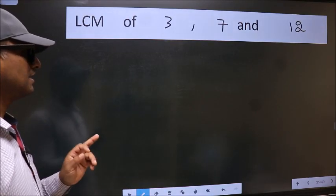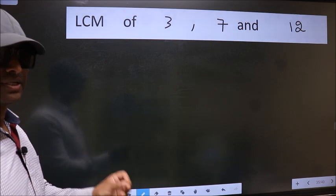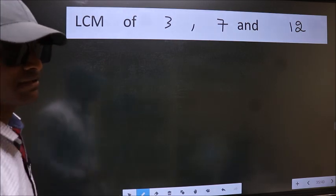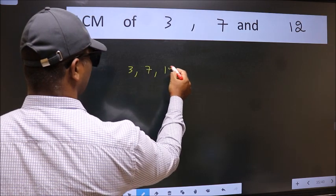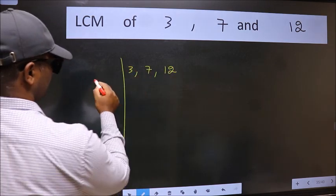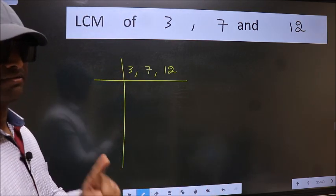LCM of 3, 7 and 12. To find this LCM, we should frame it in this way. 3, 7, 12. This is your step 1.